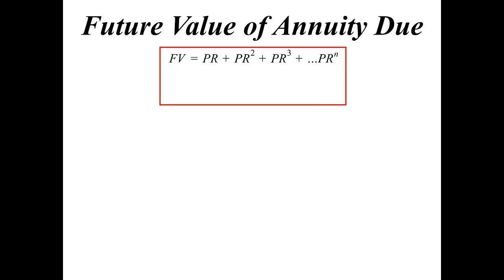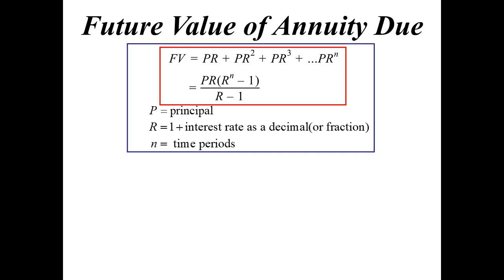So future value. Well, the future value is all of the terms added together. So that's basically what we just did. We found the future value of the investments. Here's a formula. Well, mind you, we usually do all these things from scratch. But if we want to create a formula for future value, it could be PR, R to the N minus 1 over R minus 1. P is the principal. Interest rate, 1 plus the interest rate. N is the time periods.